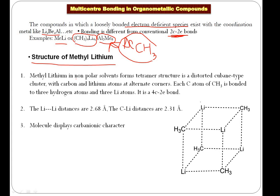Let's discuss each one. Number one: the structure of methyl lithium. Methyl lithium exists in the form of a tetramer in non-polar solvents like benzene. This tetramer has a distorted cubane-type structure in which carbon — meaning the methyl group — and lithium atoms are at alternate corners.